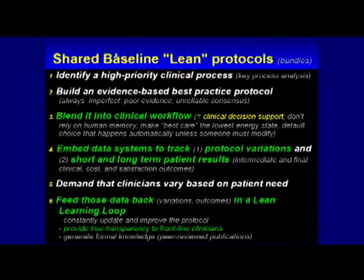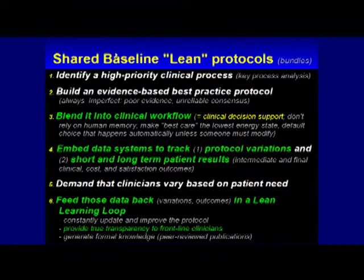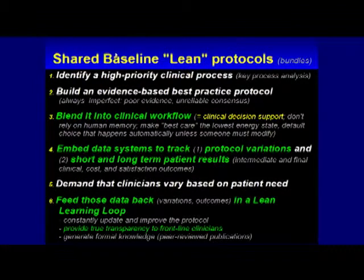In a very real sense, these are the opposite of cookbook medicine. They take your most important resource — that trained expert mind — and focus it on a relatively narrow band of issues. They have to choose what varies and how it varies. Then step six, you do it in the context of what's called a lean learning loop: data feedback, relatively rapidly, to show you when you vary the consequences for patients across the group.